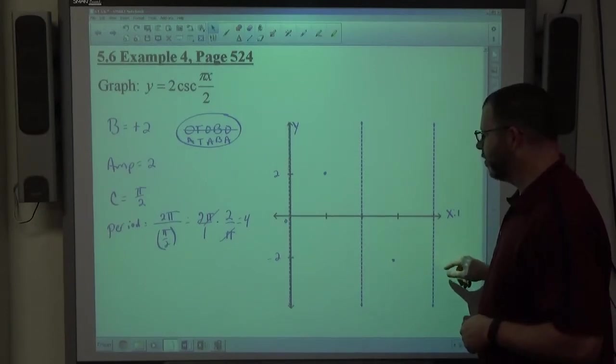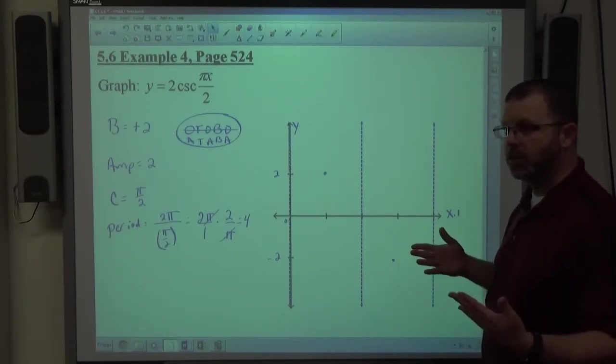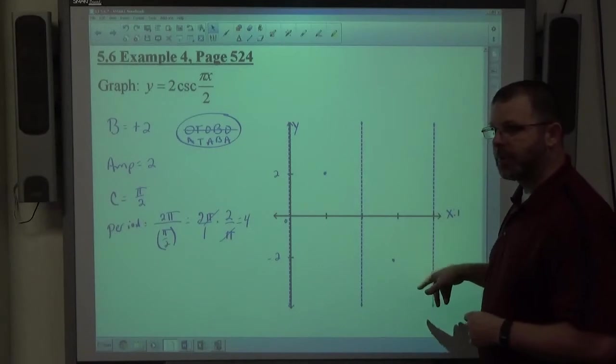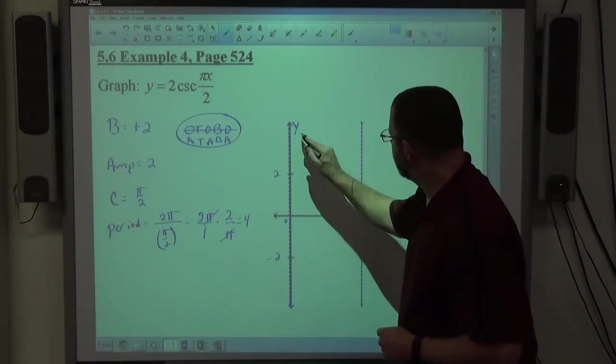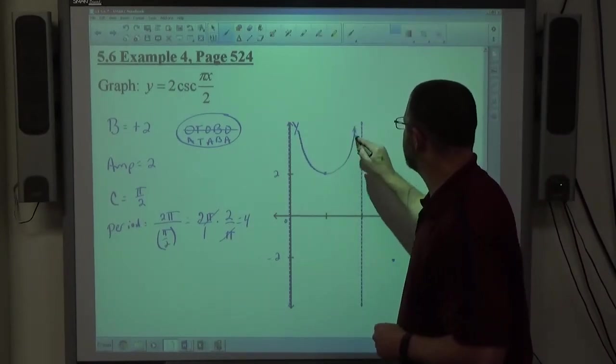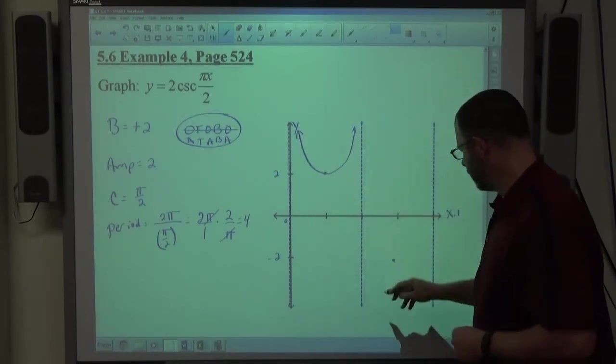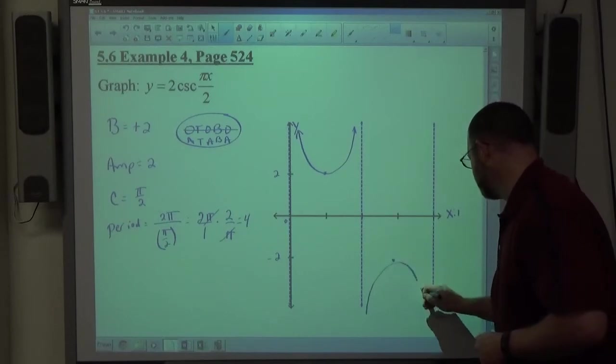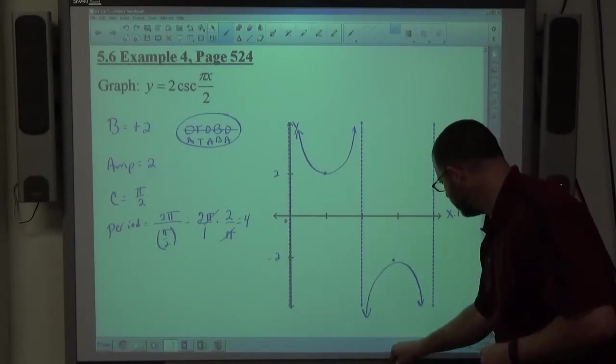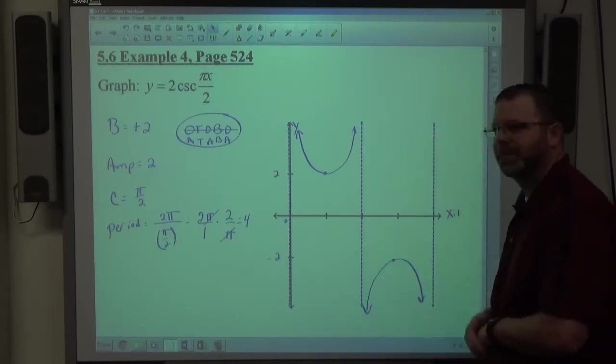So again, instead of drawing, writing the zeros in there, just draw asymptotes, and then top is top, bottom is bottom. And then I'm going to fit the curve inside the asymptotes, making sure that this is the bottom point, fit the curve inside the asymptote, making sure that's the top point. And I can probably do better than that. There we go.